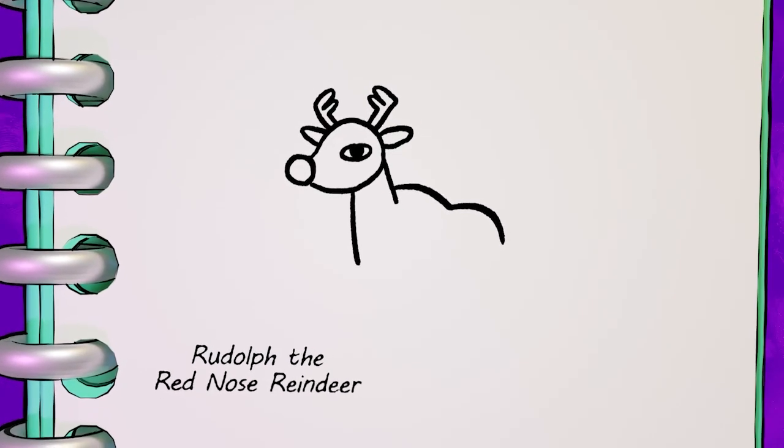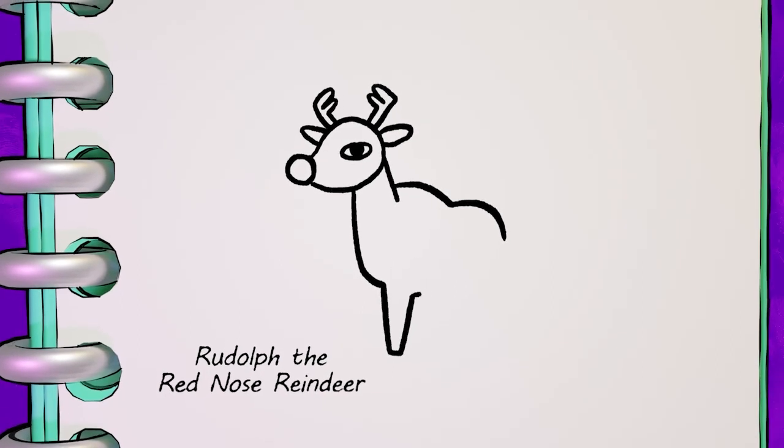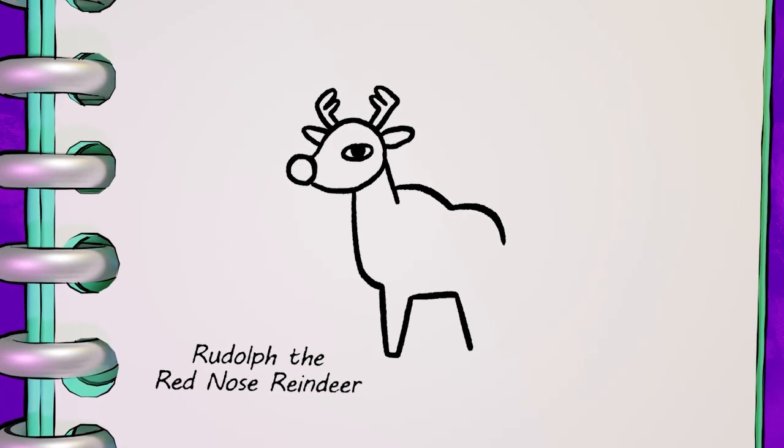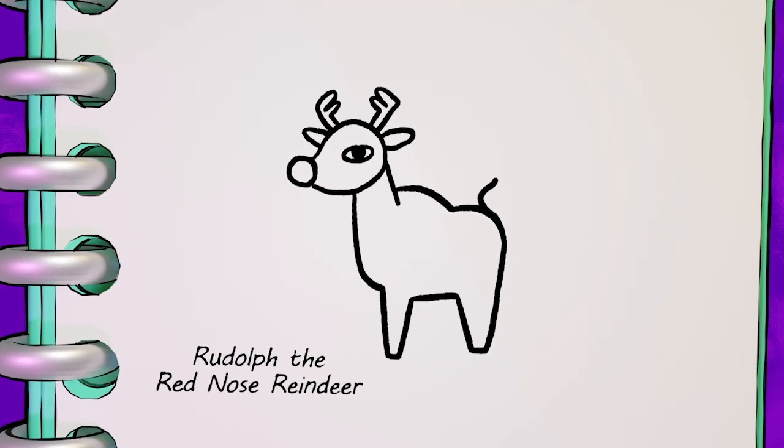This line goes down and curves, then becomes one of his front legs. Draw a short horizontal line for his belly, then draw the first of his back legs. The back leg goes up and joins back up with the end of the humps that you drew earlier.